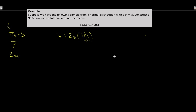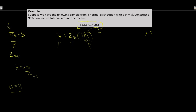X-bar needs to be calculated from the raw data: x-bar equals the summation of x all over n. Counting the data points, n equals four. Is that enough? Since the sample is from a normal distribution, we only need n greater than or equal to three. So we can appeal to the central limit theorem — the sample mean will be normally distributed. Adding up: 23 plus 17 plus 14 plus 26 divided by 4 gives x-bar equals 20.